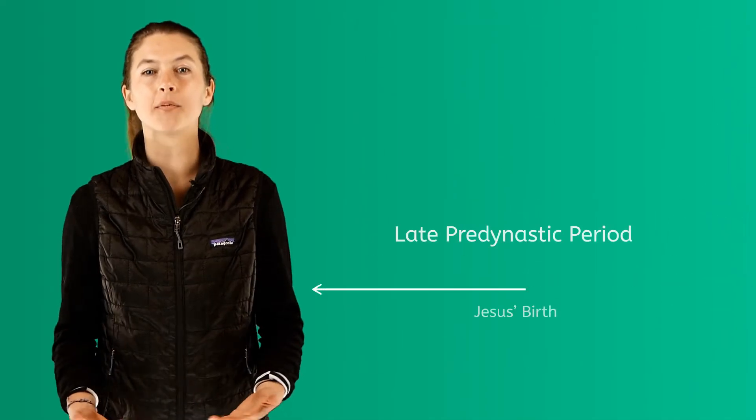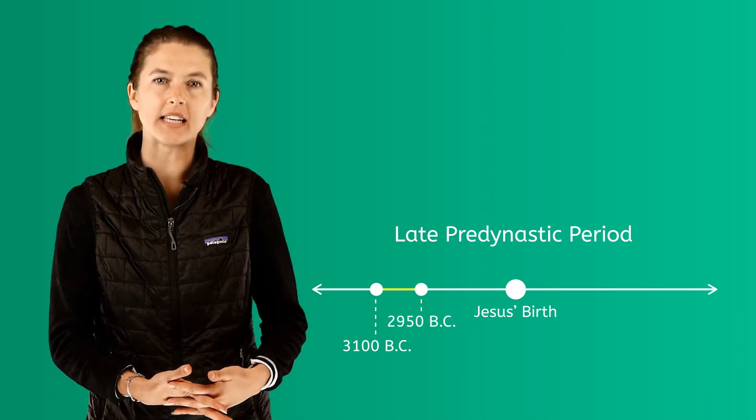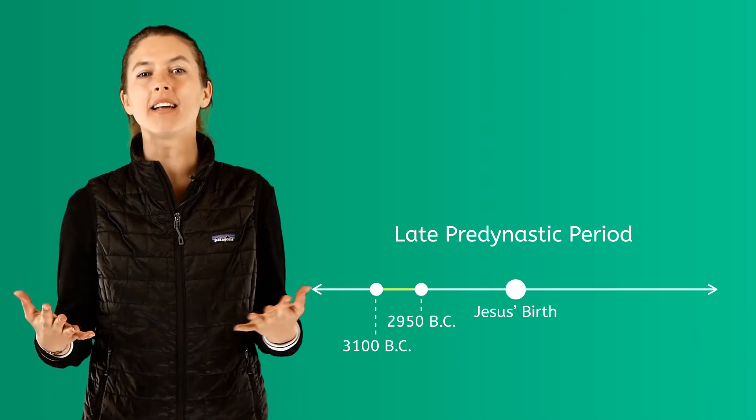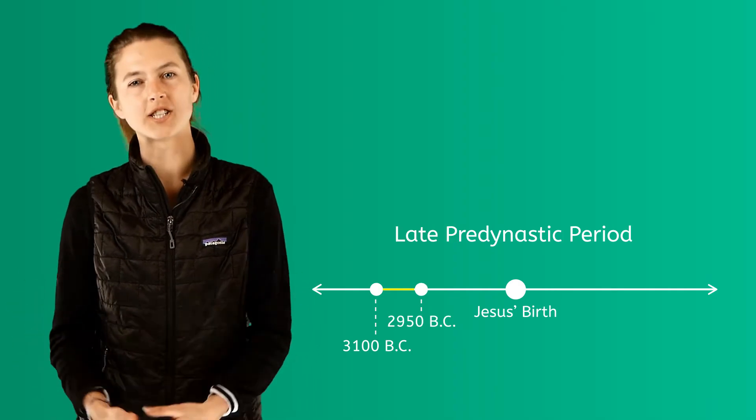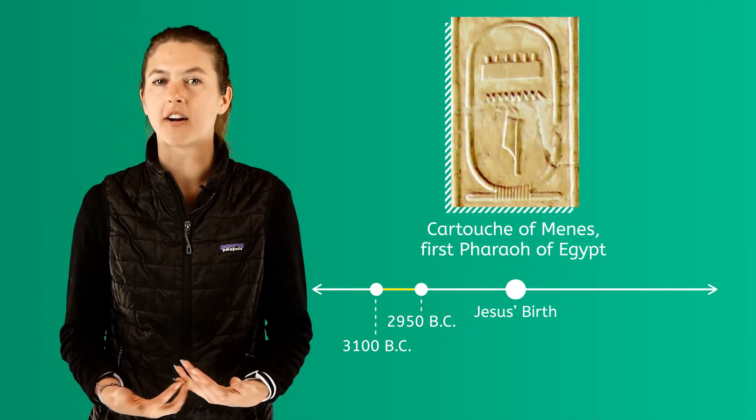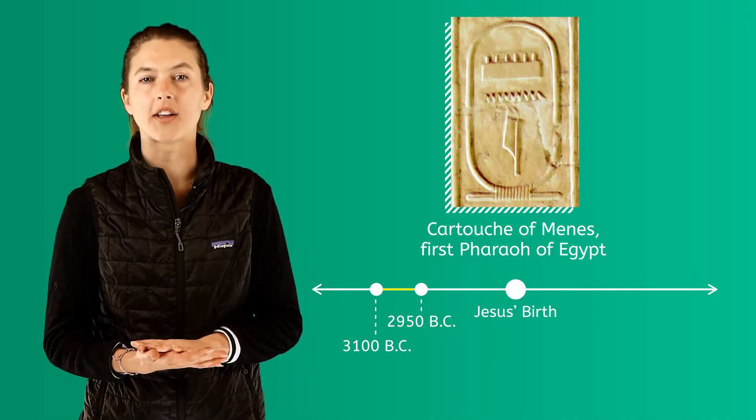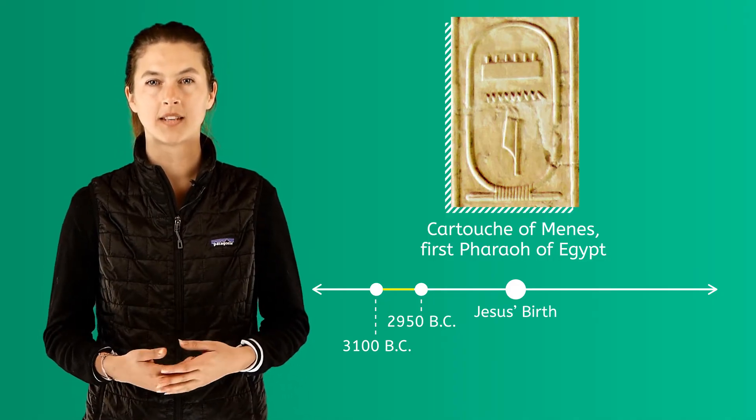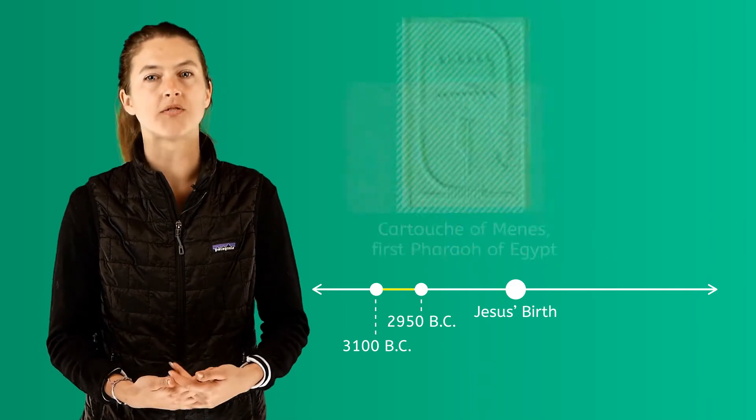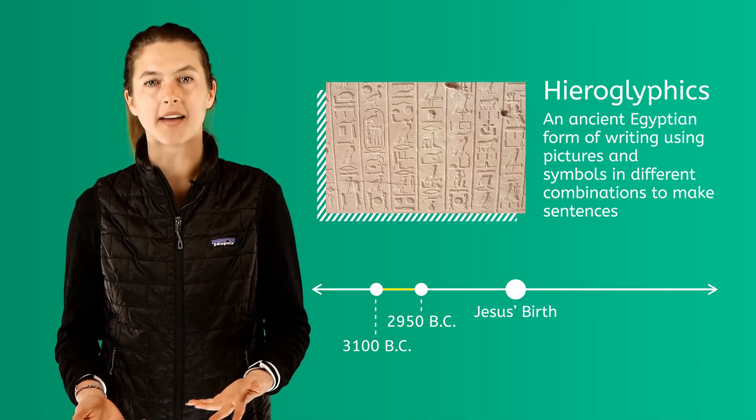The Late Predynastic Period, which lasted from 3100 BC to 2950 BC, is known as the beginning of what we think of in terms of ancient Egypt. Menes is considered the first pharaoh of Egypt because he brought the north and south parts of Egypt together into one kingdom. The ancient form of Egyptian writing with pictures known as hieroglyphics was invented at this time.